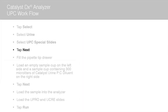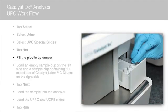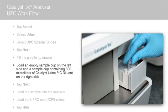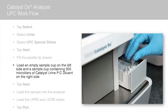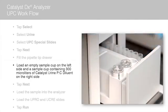The Load Dilutions Materials screen displays. Fill the pipette tip drawer. In the tip and diluent drawer, load an empty sample cup on the left side and a sample cup containing 300 µL of diluent on the right side. The sample cup should fit into the holders easily.